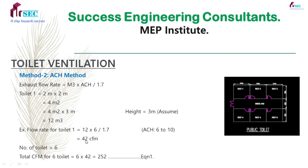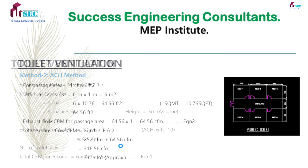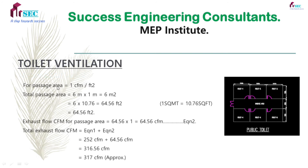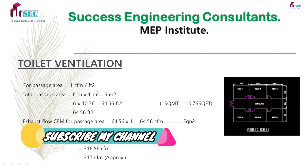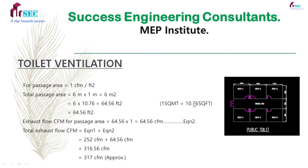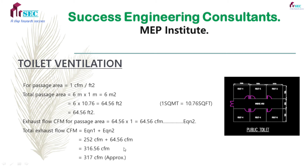Each toilet is 42 CFM, so 6 into 42 is 252 CFM — equation one. For passage area, 1 CFM per square feet; total passage area is 6 square meters. Converting to square feet: 1 square meter equals 10.76 square feet, giving 64.5 square feet. Exhaust flow rate for passage area is 64.5 CFM. So total exhaust flow rate is 316 CFM.